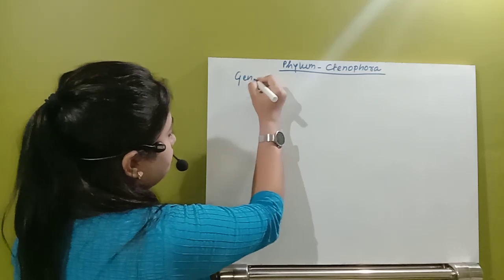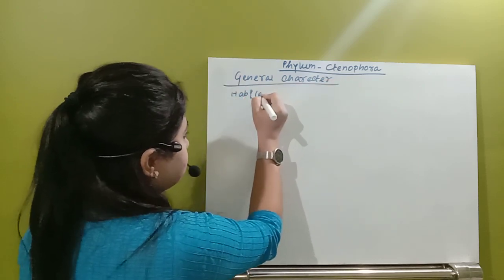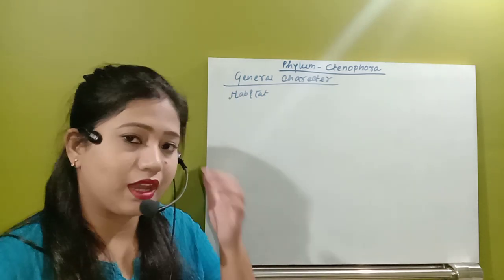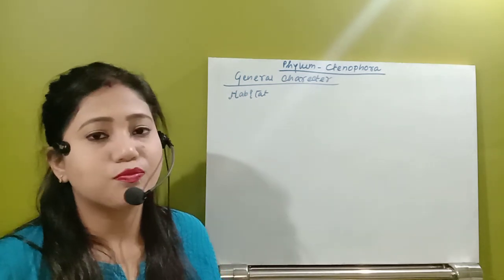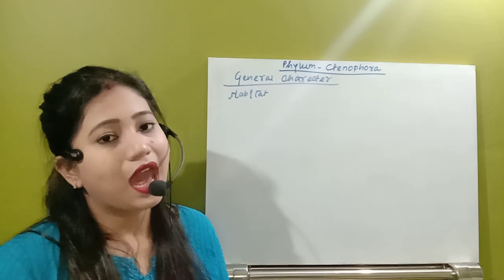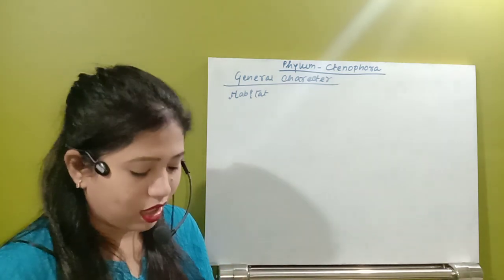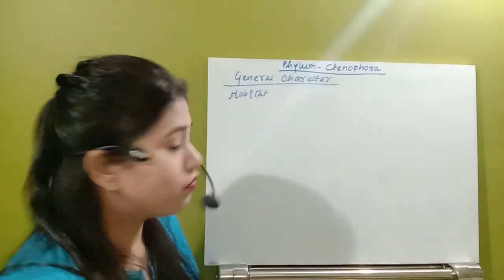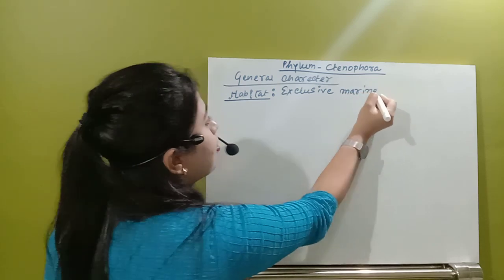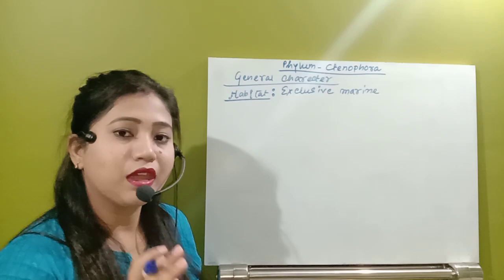First of all we'll see their general characters. The first character is about their habit and habitat. Unlike phylum Porifera and Cnidaria, where mostly they were marine but some freshwater species were also there — in Porifera, Spongilla was found in freshwater, and in Cnidaria, Hydra lived in freshwater — but in case of phylum Ctenophora, no species lives in freshwater. The habitat is exclusively marine only. Not even a single species is found in freshwater.